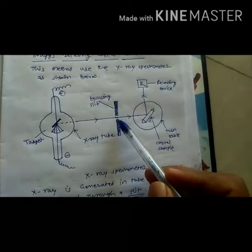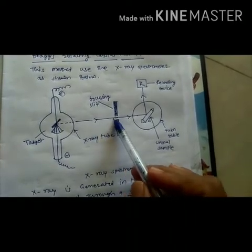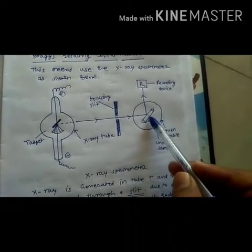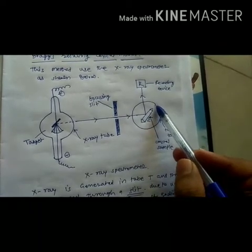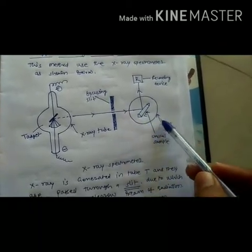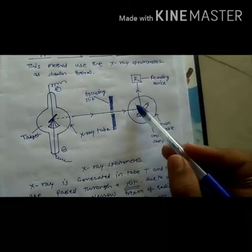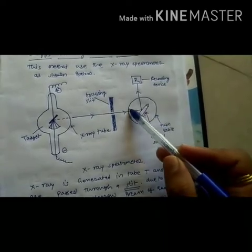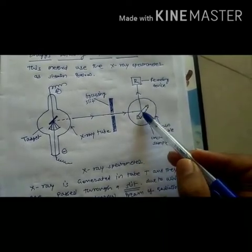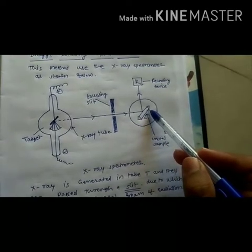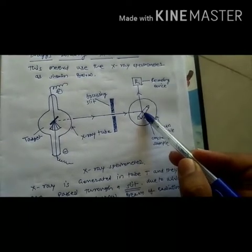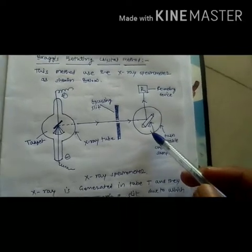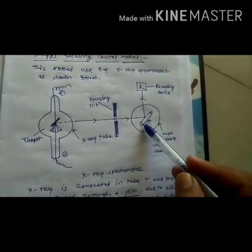Now this crystal is present on one device that is nothing but a turning table. This table is continuously turning because of which the crystal is rotating. As this crystal is rotating, the angle of rotation is continuously changing.